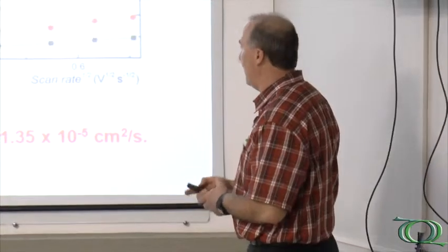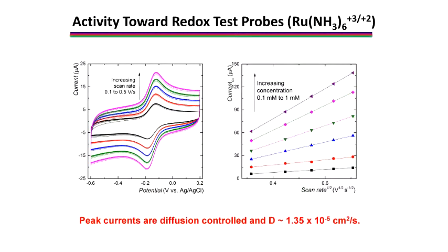You can investigate how things change with the sweep rate to learn about the nature of the mass transport. This again is a ruthenium system — these are the voltammograms. The reduction of ruthenium 3 to 2 and the oxidation back to ruthenium 3. Curves are shown for increasing scan rate, and they show nice linear behavior with the square root of the scan rate. So the nature of the mass transport for this system is semi-infinite linear diffusion with no adsorption.